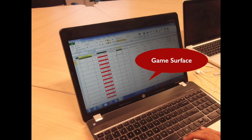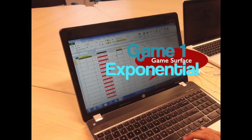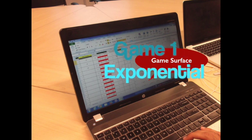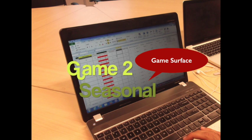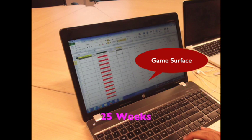This is our game surface. Both of the two teams will play game on it. There are two games. The difference is the trend of demand. In the first game, the trend is exponentially increasing and the second one is seasonal trend. And there are 25 weeks in each game.